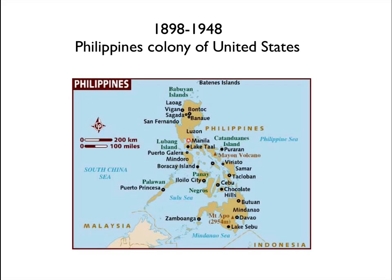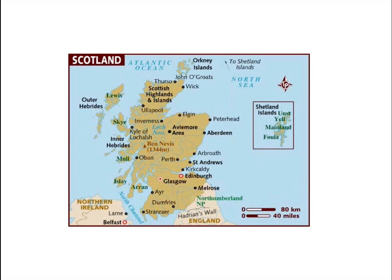Since the Philippines lacked sovereignty, it was not a state — it was a colony. Scotland is part of the United Kingdom. It has territory, a government in Edinburgh with a First Minister, and a population. However, the Scottish government is limited in the decisions it can make. As of this recording, the people of Scotland are in the process of being asked if they want complete sovereignty. Should they choose and gain complete sovereignty, they would become an independent state and no longer part of the United Kingdom.